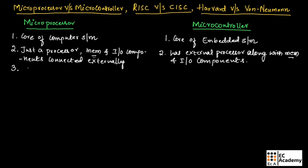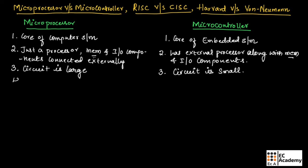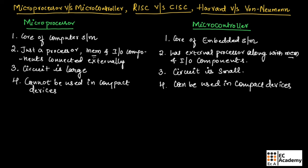Since IO components have to be connected externally in a microprocessor, the circuit becomes large. Since memory and IO components are present internally in a microcontroller, the circuit is small. Therefore, microprocessor cannot be used in compact or small-size devices, whereas microcontroller can be used in small-size devices.